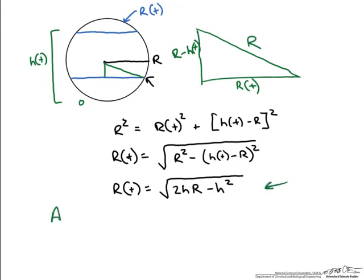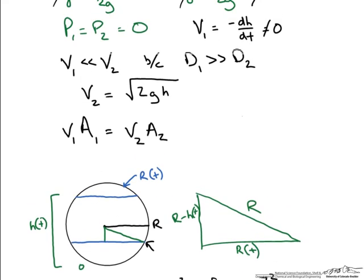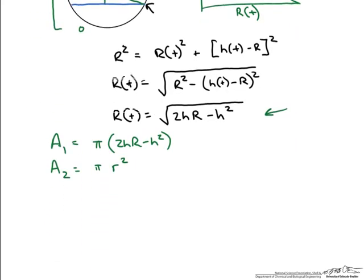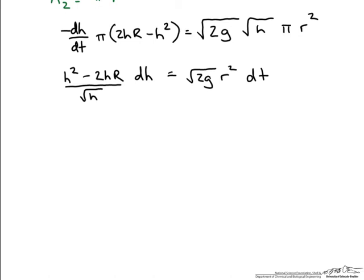So the area at point 1 is pi times (2hR minus h squared), and the area at point 2 is pi times r squared. Recalling that velocity 1 is dh/dt and velocity 2 is the square root of 2gh, we plug these into the continuity equation. Rearranging, we bring all h terms to the left side and separate variables. We then integrate both sides: the left side from an initial height to a final height, and the right side from time 0 to time t.